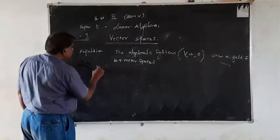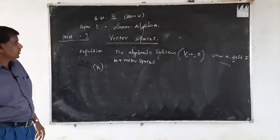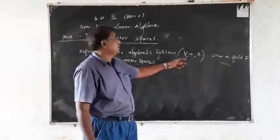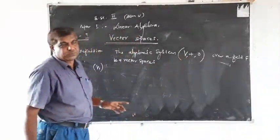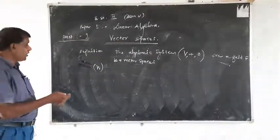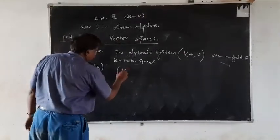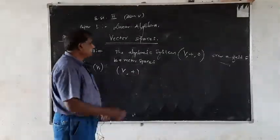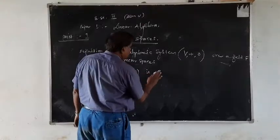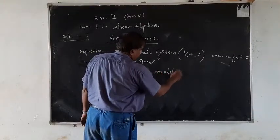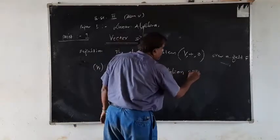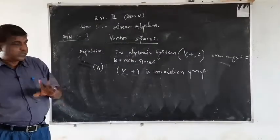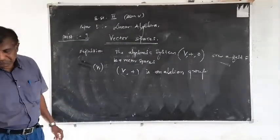The first property, V1, for this vector space: the operations are addition and multiplication. V over addition is a commutative group, or is an abelian group.